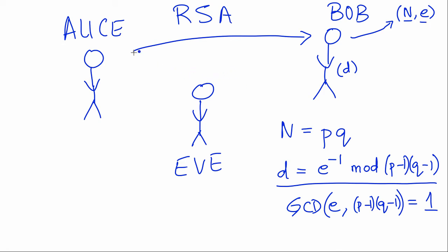When Alice tries to transfer a message to Bob, suppose she tries to transfer a message X, then she encrypts the message X by the encryption function, which is X to the E mod N. She can easily do that because she can see Bob's N and Bob's E. So Alice sends Bob X to the E mod N.